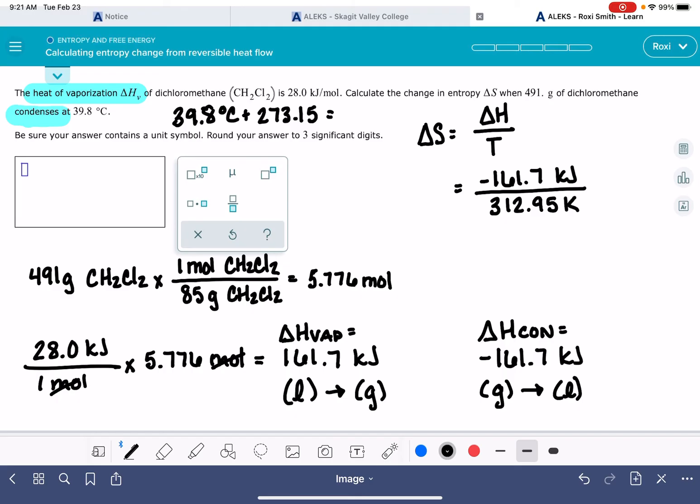And now we're ready to actually solve. Negative 161.7 divided by 312.95 gives us a negative 517. Our units are kilojoules per Kelvin. And this problem is giving us the freedom to type in those units ourself. So we can leave it in units of kilojoules if we want, or we could convert it into units of joules if we wanted. Negative 0.517 kilojoules per Kelvin.